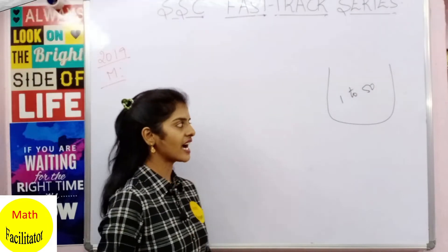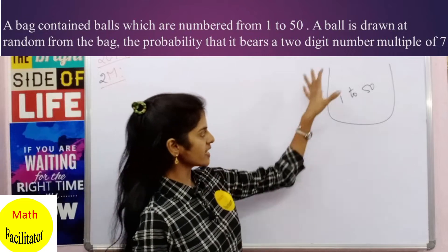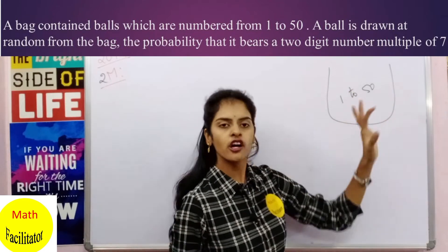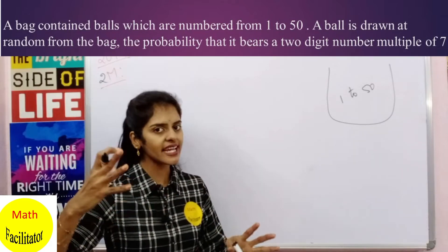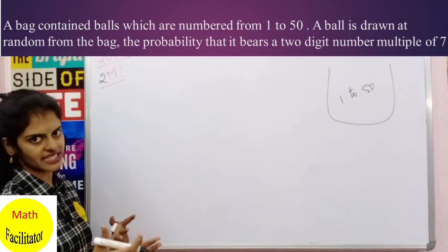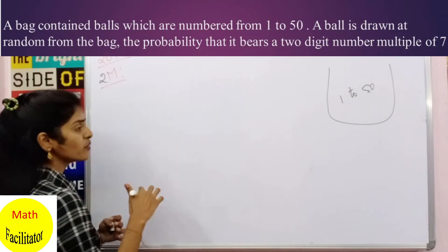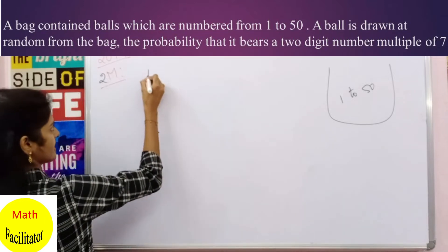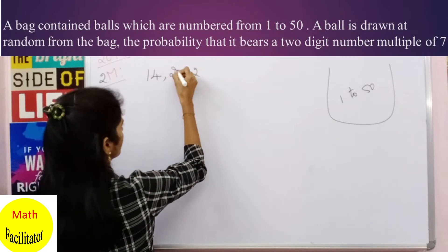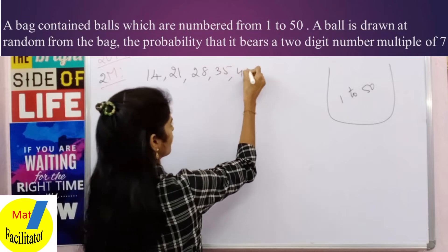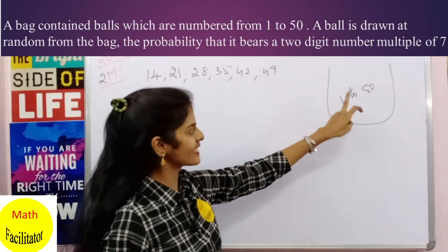Our next question is from 2019, a two-marker. In a bag there are balls numbered from 1 to 50, and you have to find the probability that when you pick up a ball it is a two-digit multiple of 7. Multiples of 7 are 7, 14, 21... We want two-digit multiples of 7, which start from 14: so 14, 21, 28, 35, 42, 49.